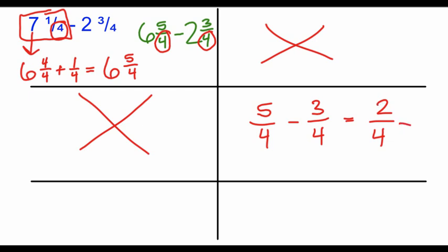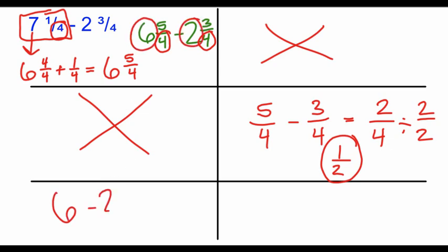Now, we're going to have to reduce and simplify. We can divide by 2 over 2 to make this final fraction 1 half. In this box down here, we're subtracting our whole numbers. 6 minus 2 is 4. In our final box, we're piecing our whole number and our fraction back together. 4 and 1 half is our final answer.